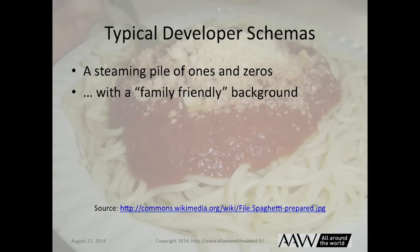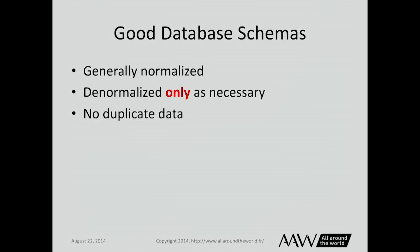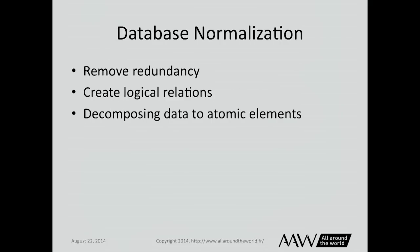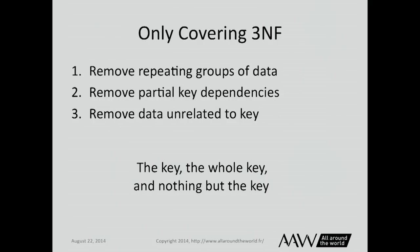Good database schemas are normalized — whatever that means — and denormalized only as necessary. No duplicate data is extremely important. Then there are things like removing redundancy, logical relations, atomic elements — which gets into a rabbit hole I won't cover today. I'm covering up to third normal form, without using the normalization terms, to try and get past this problem.